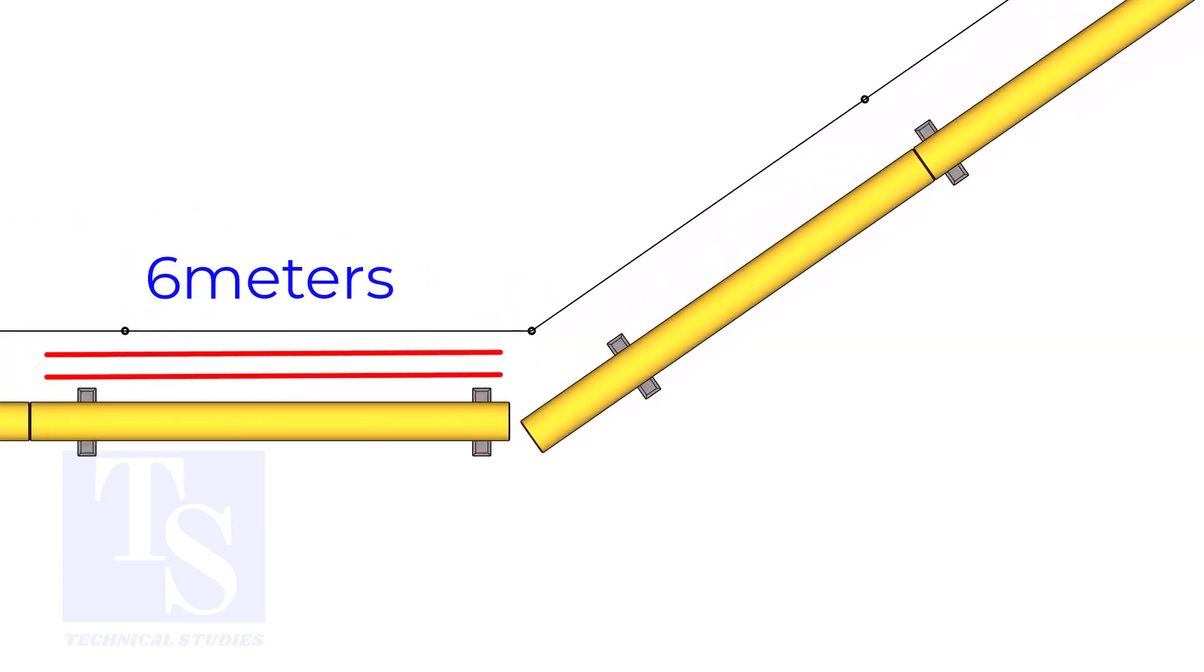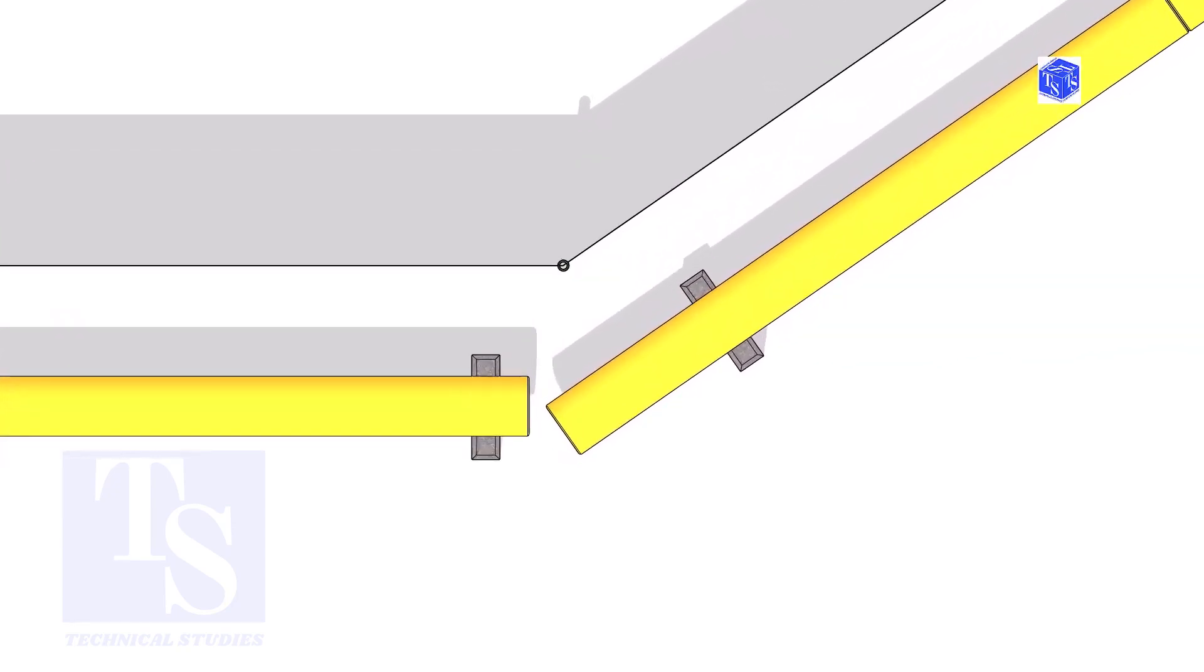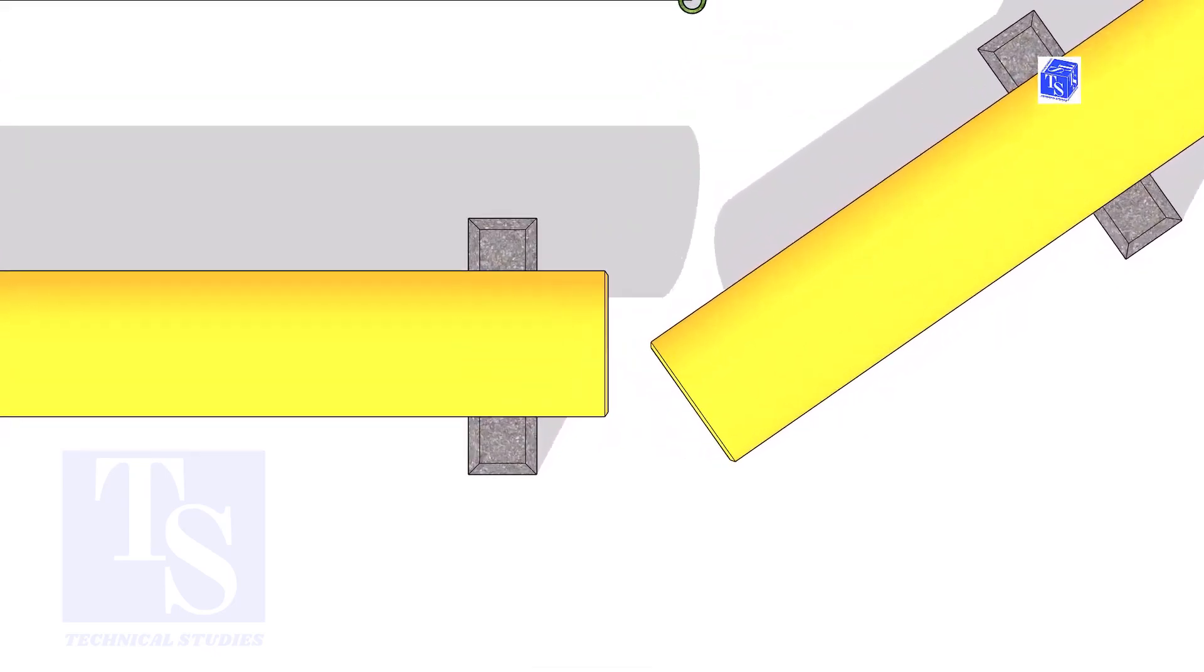The pipe shall be parallel to the fencing, not necessarily the entire length, but at least 6 meters on both sides. Not necessary the centerlines of both pipes are in a line.